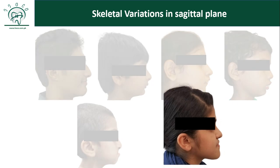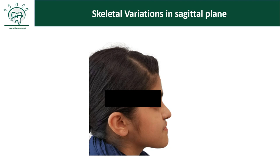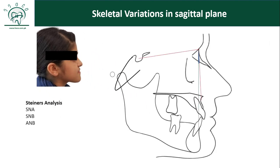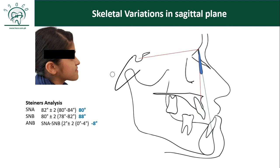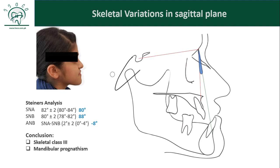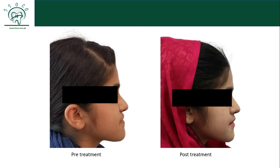Now look at this case — the profile is concave. If you draw a true vertical line, the chin and lower lip are far ahead of this line, showing this is a skeletal Class 3 patient. On the lateral cephalometric radiograph, SNA is pretty normal; however, SNB has been increased, resulting in a reduction of the ANB angle. If you subtract 88 from 80, the result is minus 8. Whenever the ANB value is less than 0 — that is, negative — you call it skeletal Class 3, and the reason here is mandibular prognathism. I camouflaged this case by extraction of lower premolars and moving the lower incisors back, and now the patient has a straight profile.